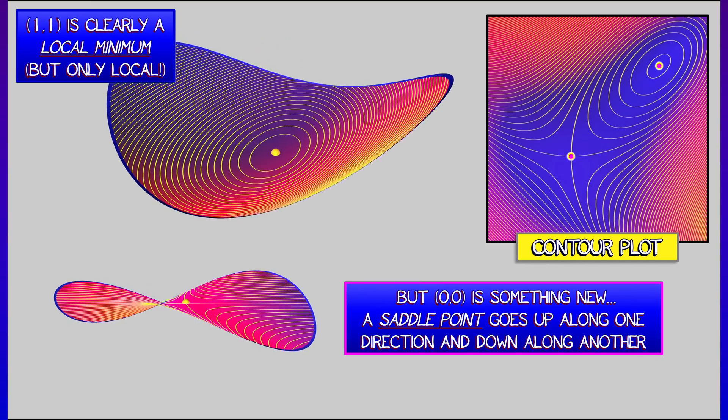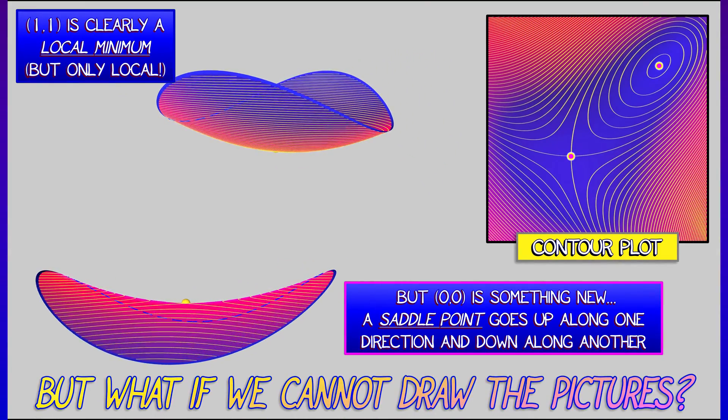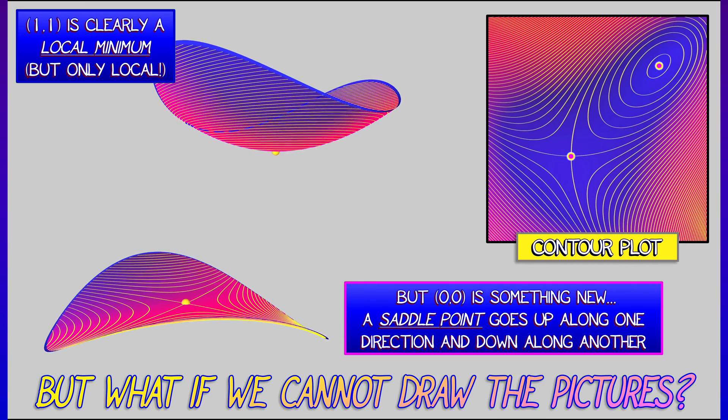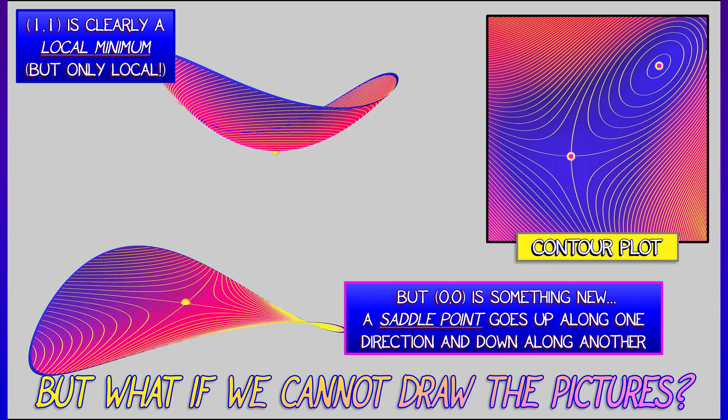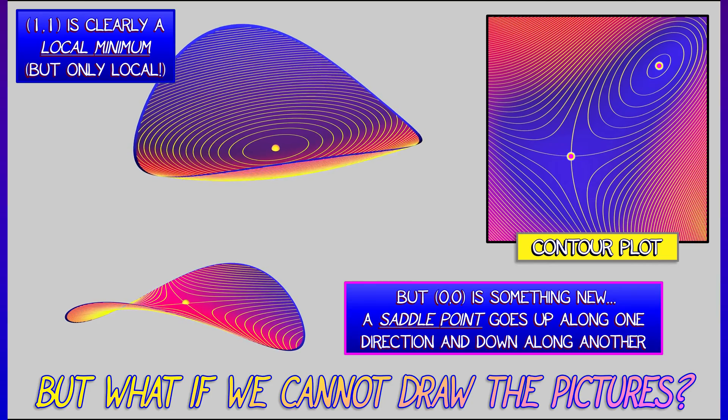Now, you might say, well, I don't care. I only want local maxes or mins. Oh, no. You should care about saddle points. But what do we do if we can't draw the picture and investigate? How do we determine local maxes, local mins, saddles? That comes next.